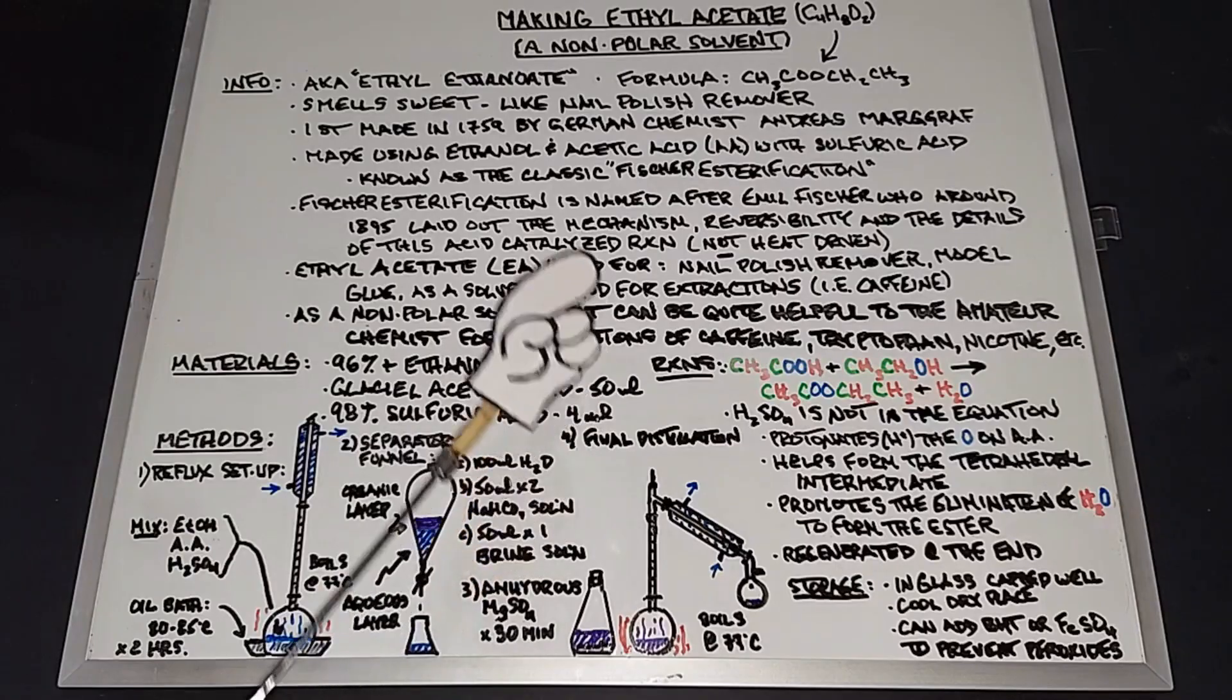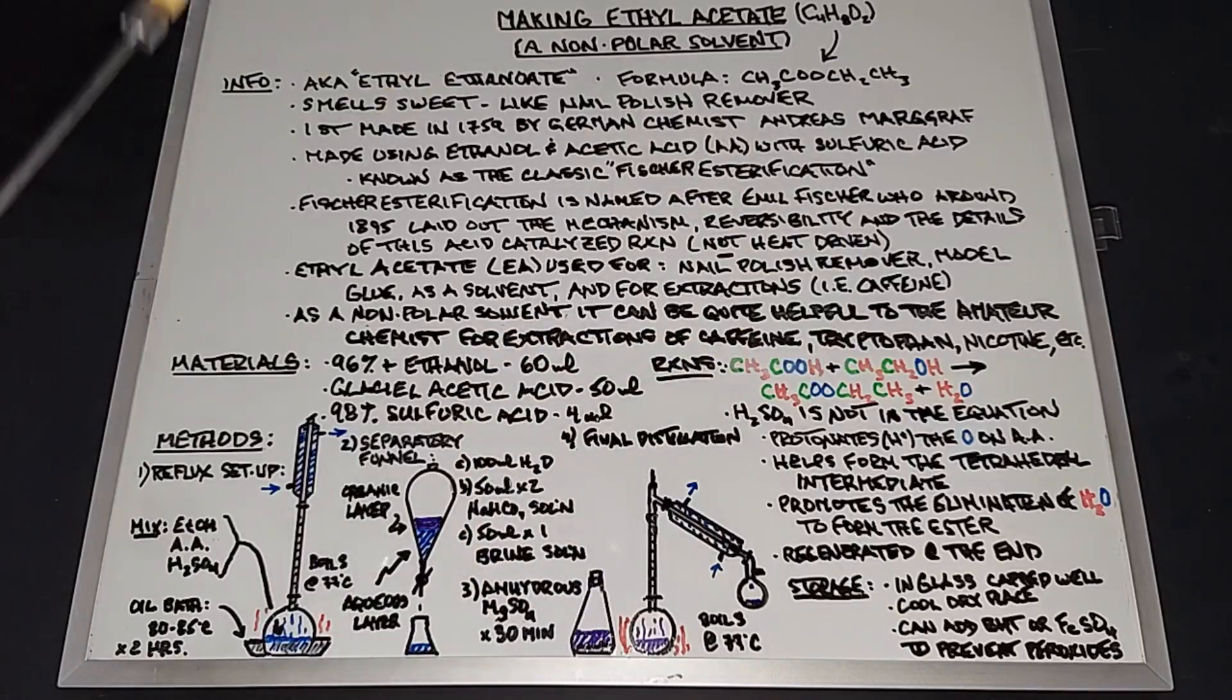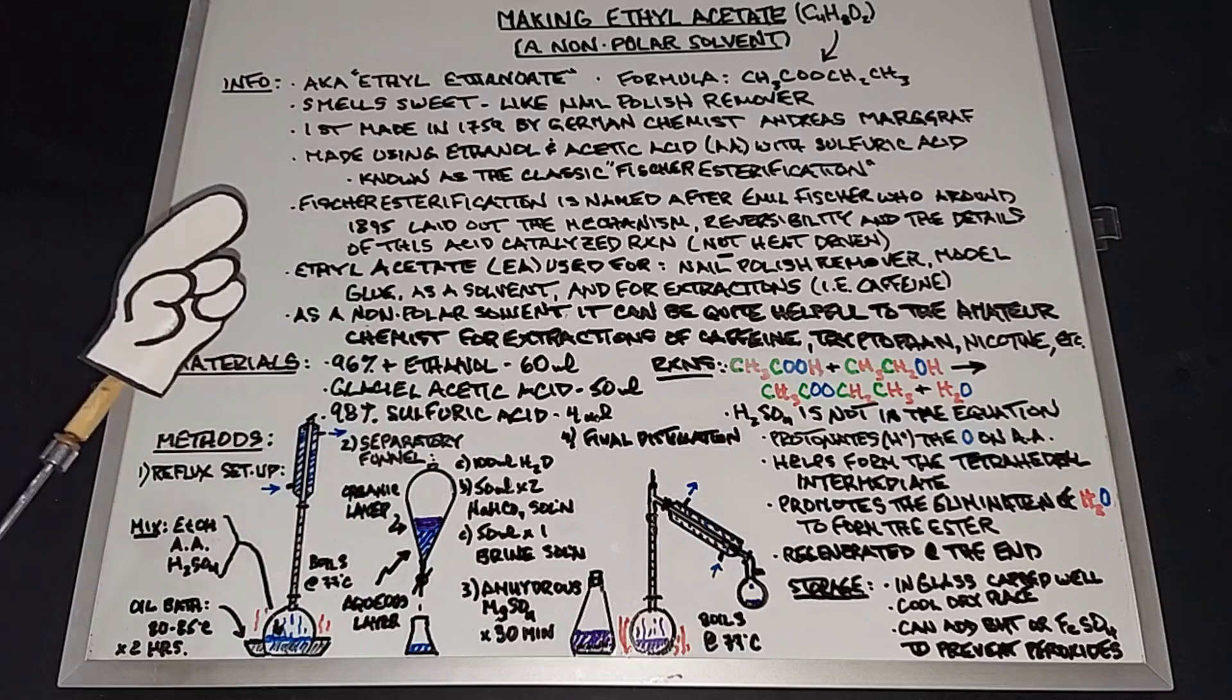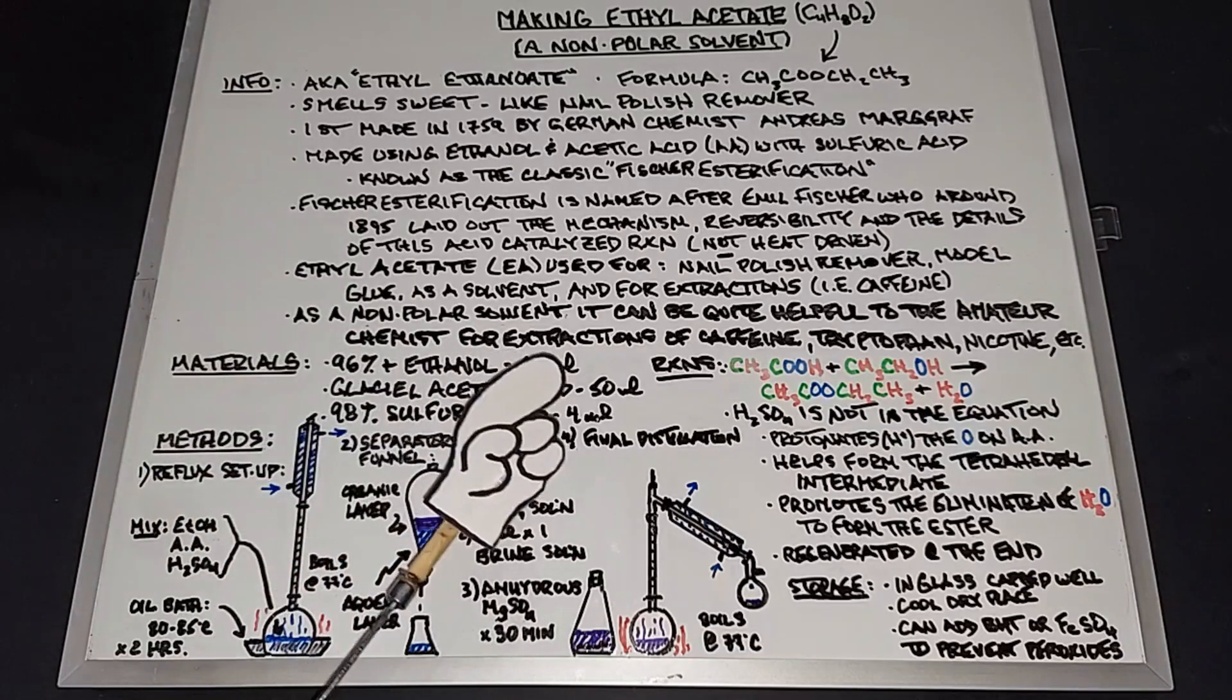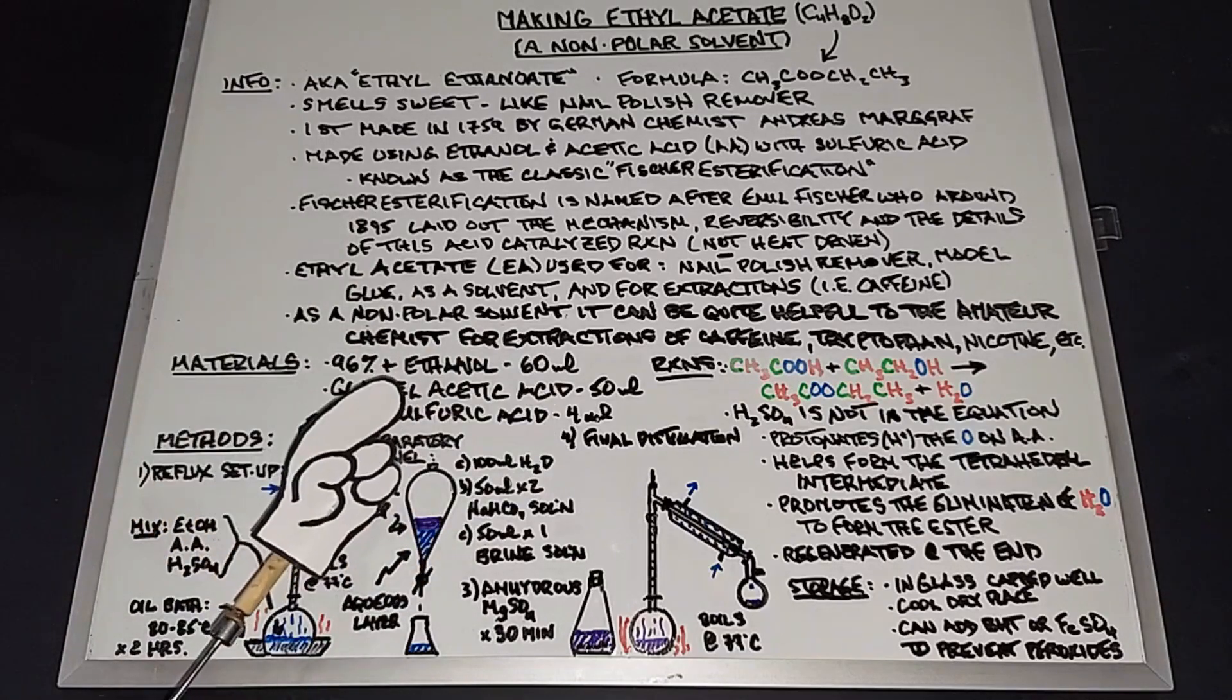To count as a Fischer esterification, you need an alcohol, which we're using ethanol; you need a carboxylic acid, we're using acetic acid; and you need an acid, and we're using sulfuric acid.